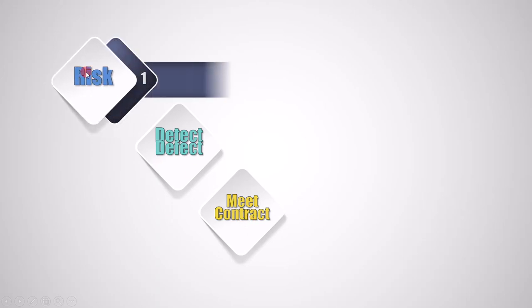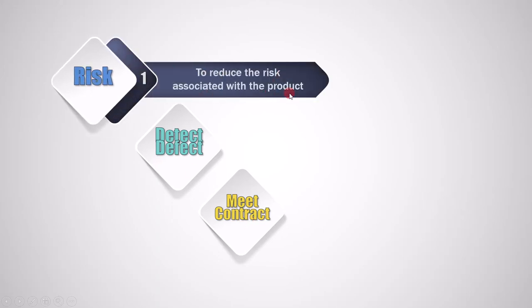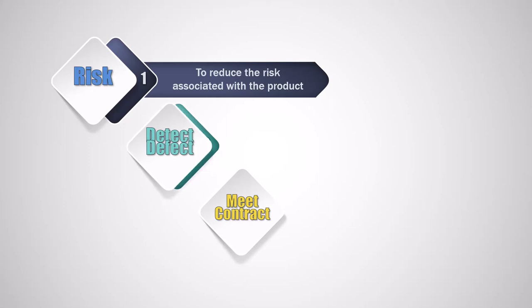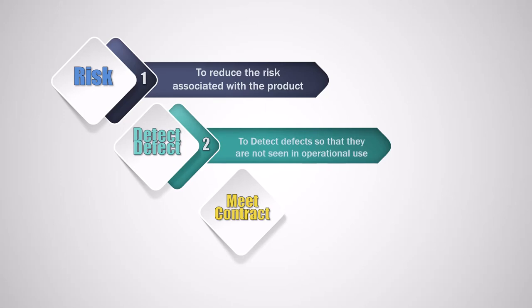We perform testing to reduce the risk associated with the product because it reduces the possibility of finding a bug during live use. And how do we do that? By detecting the defect. We have to detect defects so that they are not seen in operational use — when the user is using our product, they should not be able to find these defects. It's our responsibility to find them first through testing.